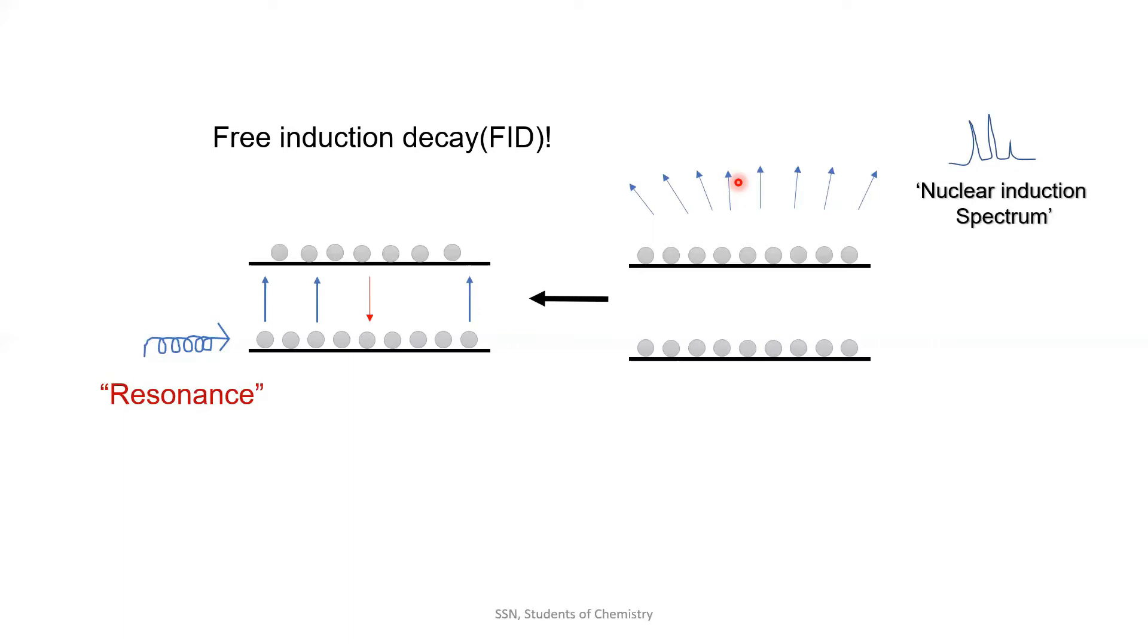The mathematical technique with which we convert this time domain signal to frequency domain spectrum, that is, from a signal which varies with time to a spectrum which varies with frequency, is called as Fourier transformation technique.